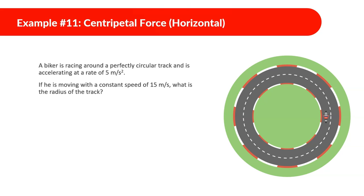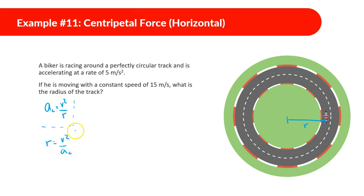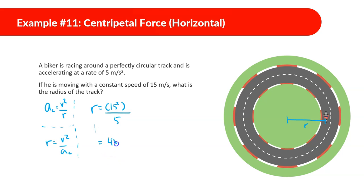A biker is racing around a perfectly circular track and is accelerating at 5 meters per second squared. If he is moving at a constant speed of 15 meters per second, what is the radius of the track? We know r equals v² over centripetal acceleration. So r equals 15 squared divided by 5. Plugging in: 15 squared divided by 5 gives us 45 meters.